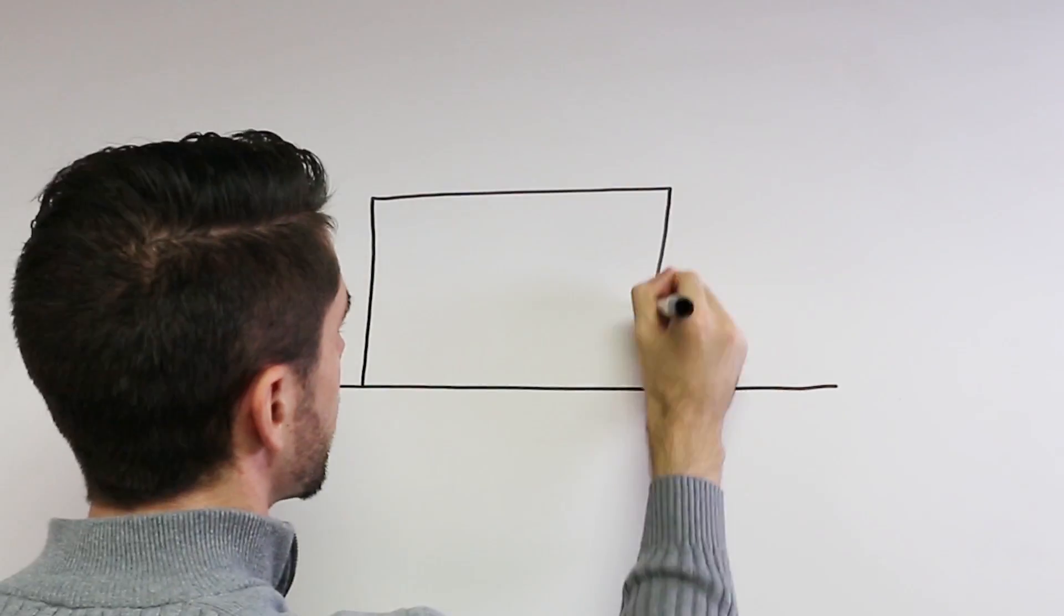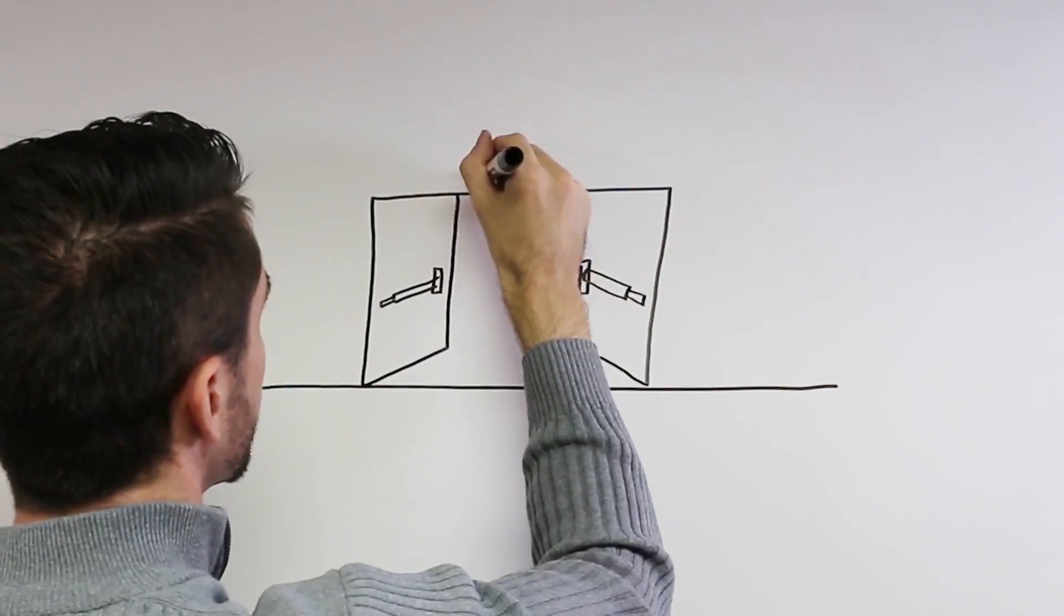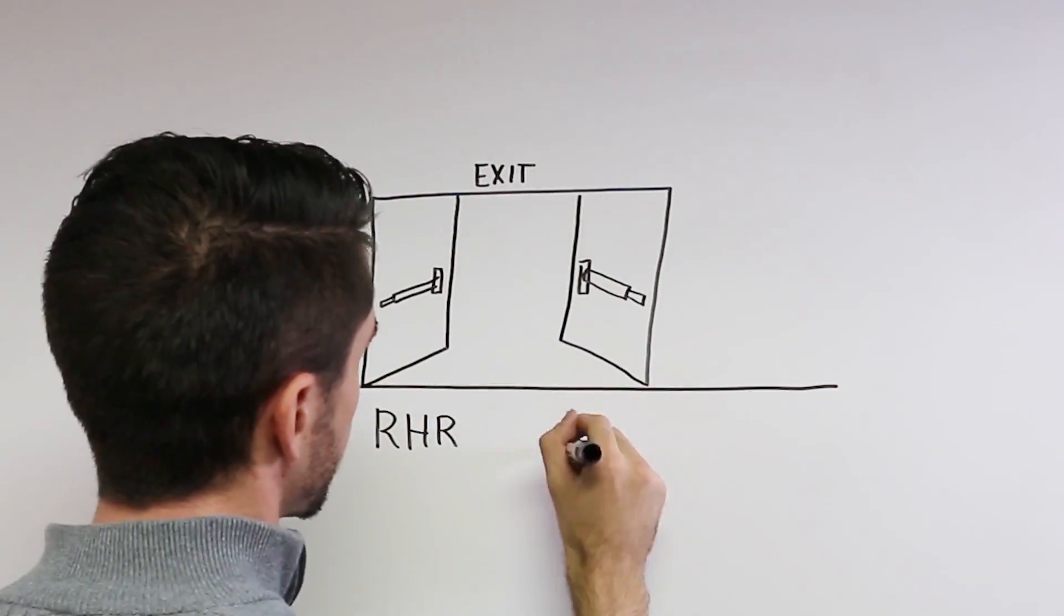Doors with exit devices are always outswinging, so these doors and the exit devices installed on them are always handed LHR or RHR.